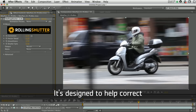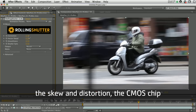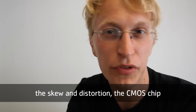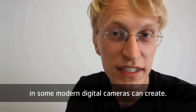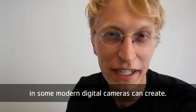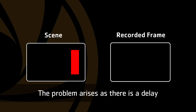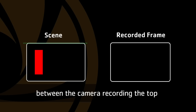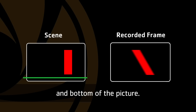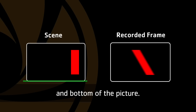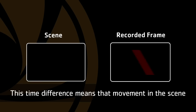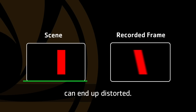It's designed to help correct the skew and distortion that the CMOS chip in some modern digital cameras can create. The problem arises as there's a slight delay between the camera recording the top and the bottom of the picture. This time difference means that movement in the scene can end up distorted.